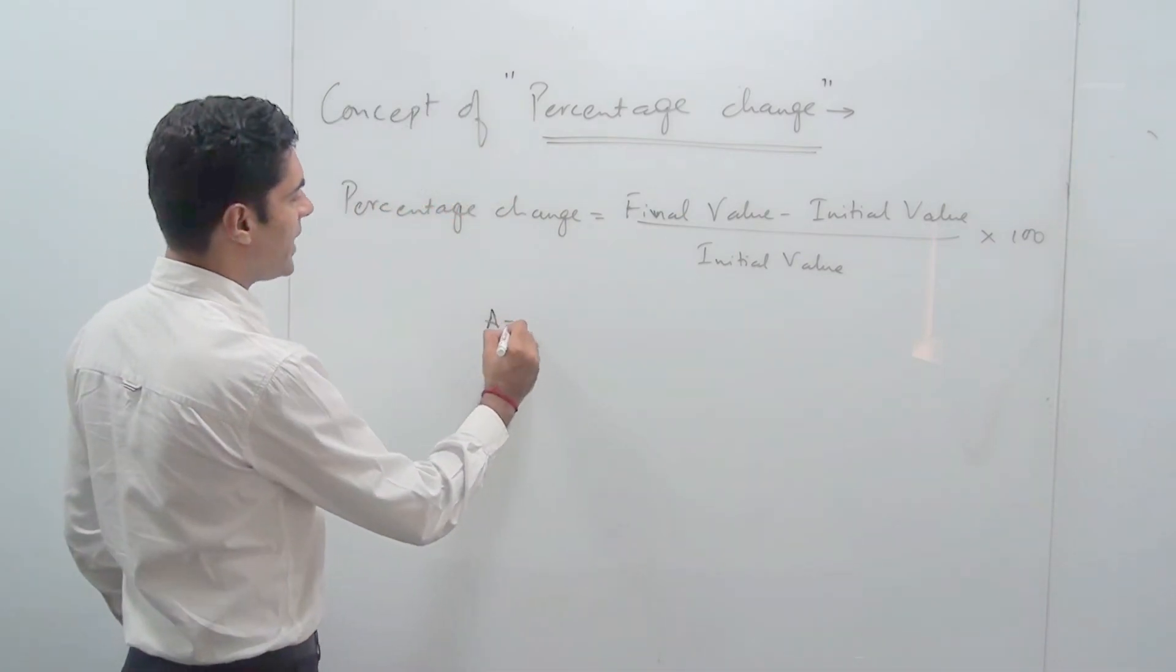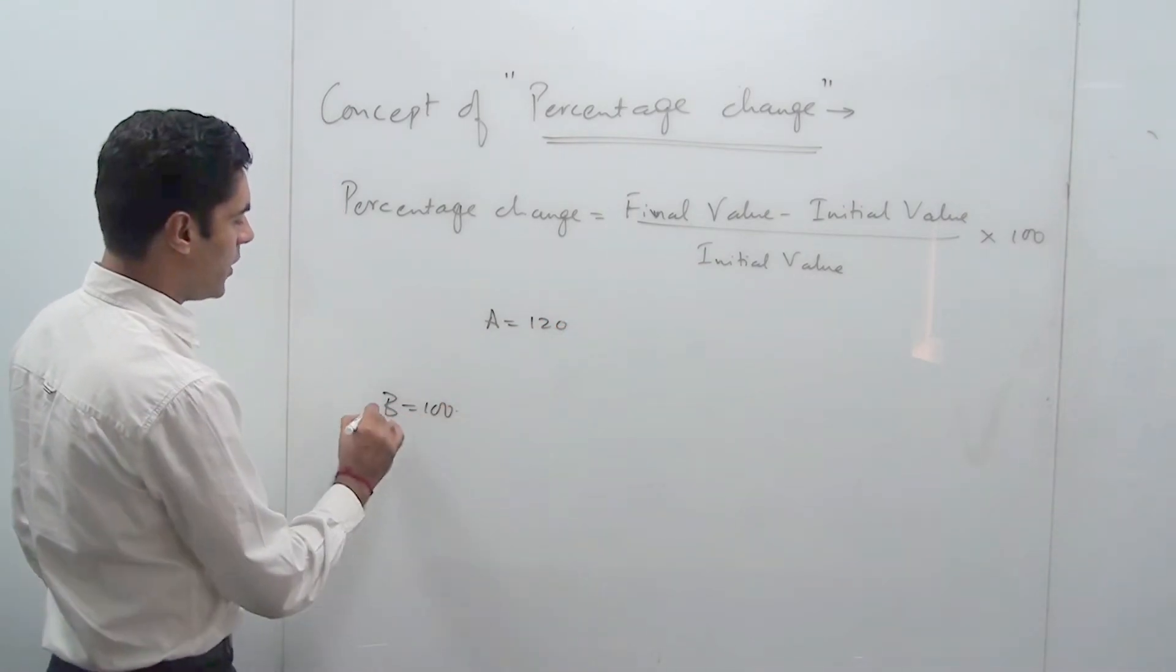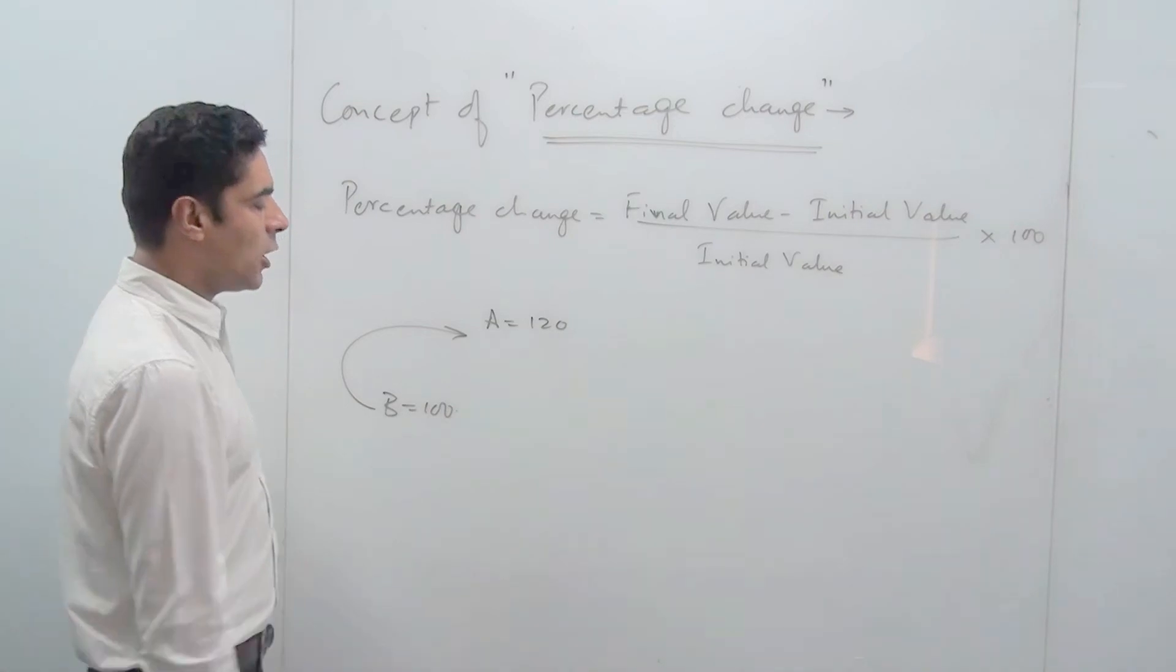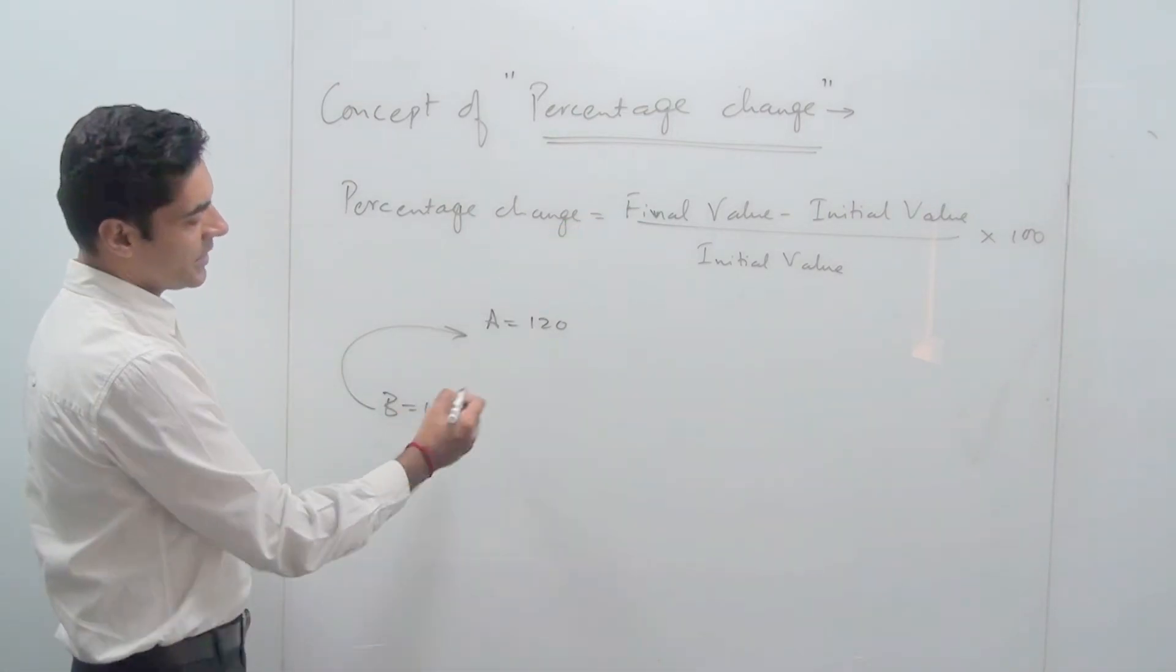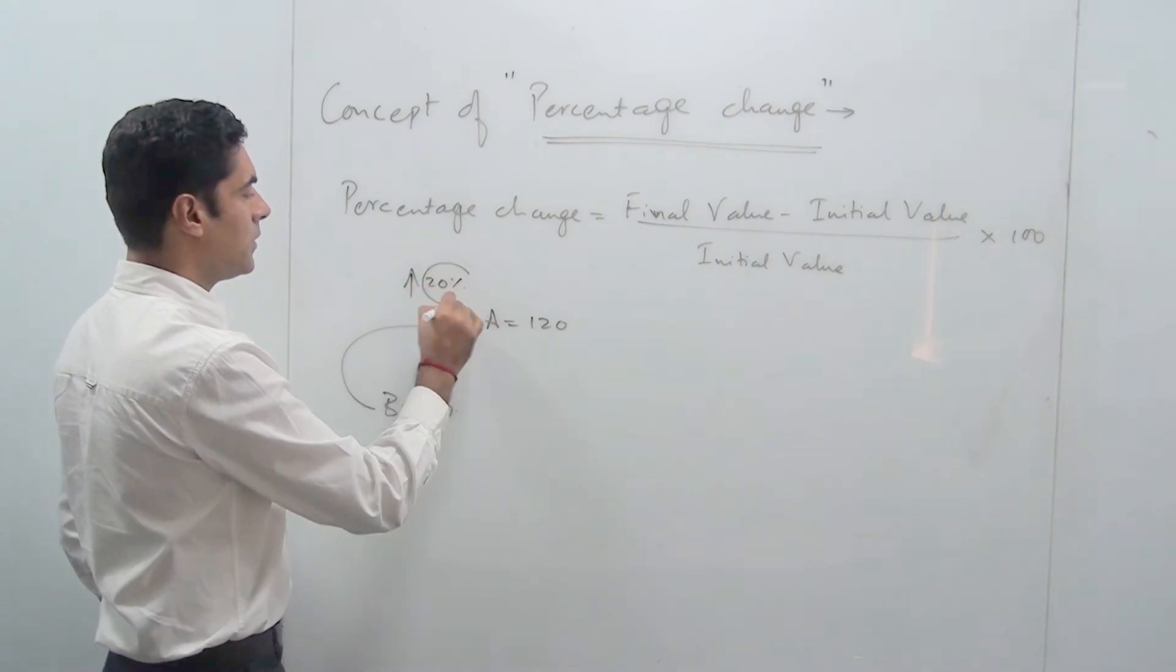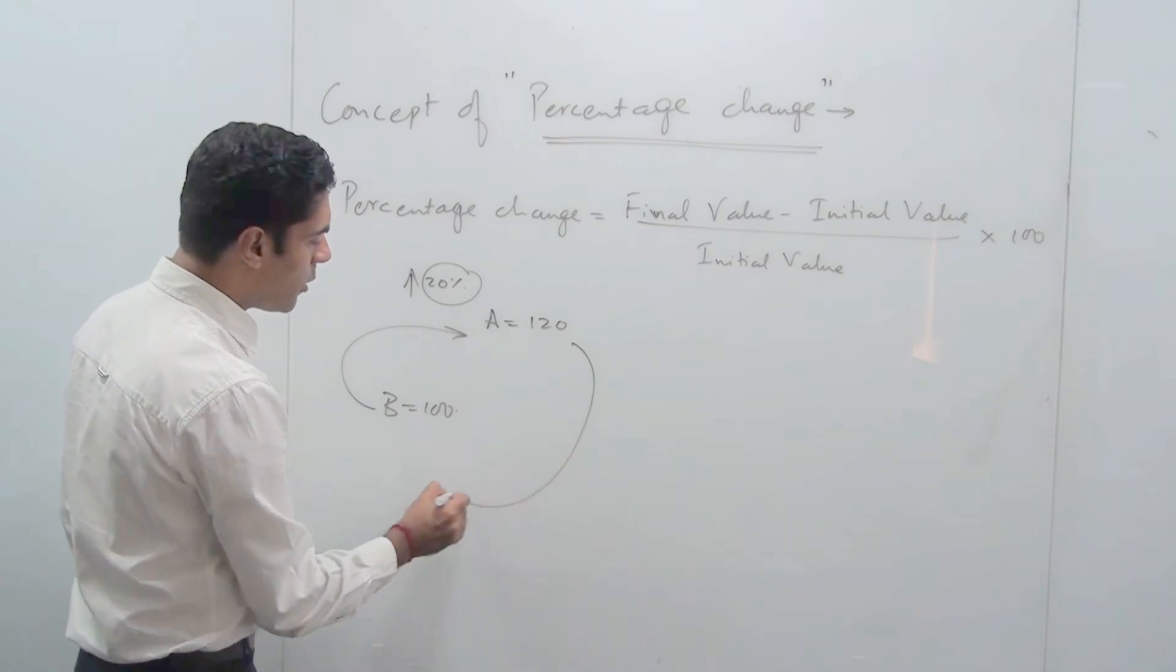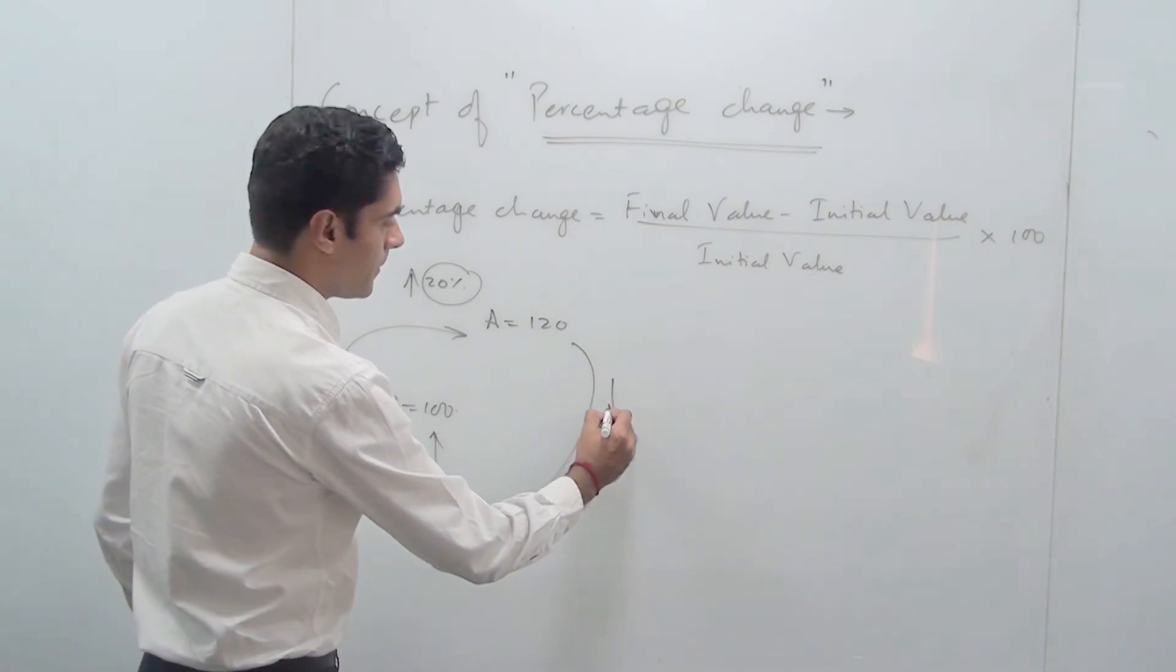Let's say for example A is 120 and B is 100. If I ask you A is how much percent more than B, if you put this into it it's very apparent that A is 20% more than B.